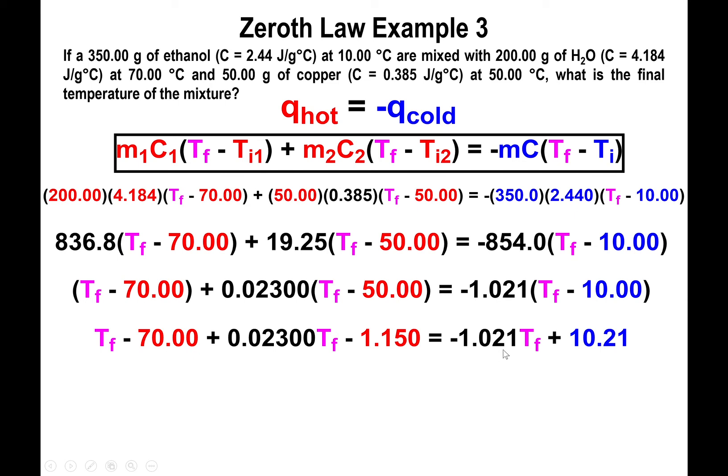All right, now like the previous examples that we did, what you want to do is get all the T_f terms on the same side. So that means that we will add 1.021 T_f to both sides, and we want to bring all the non-T_f terms to the opposite side. So add 70 and add 1.150 to both sides.